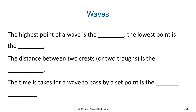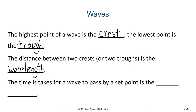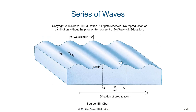When we look at waves, the highest point of the wave is known as the crest, whereas the lowest point of the wave is the trough. The distance between two crests or two troughs is known as the wavelength. The time it takes for a wave to pass by a set point is known as the wave period. The wavelength is measured from crest to crest or trough to trough, and the wave period is the amount of time it takes to move one wavelength.